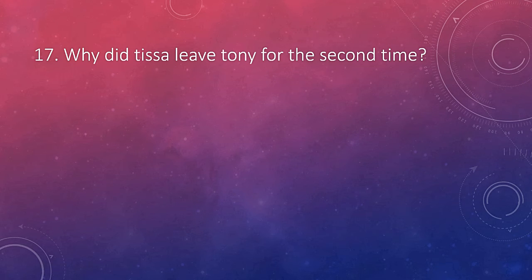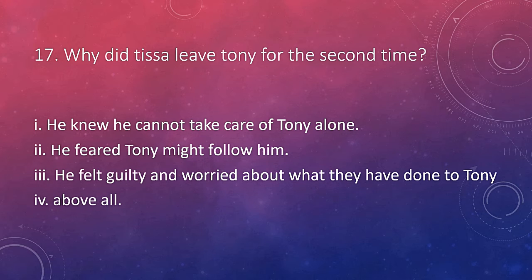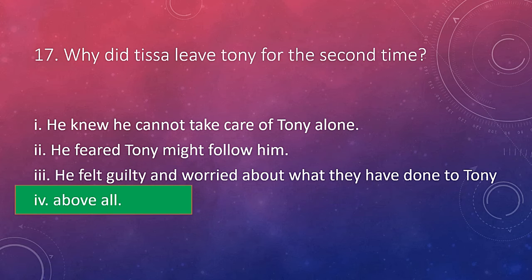Why did Tisha leave Tony for the second time? He knew he could not take care of Tony anymore, and he feared Tony might follow him. In the space of the novel, one may be critical about the narrator leaving Tony after seeing his poor condition. But we should understand that the boy was too helpless — he cannot independently give shelter to Tony as he is still a young boy. He understands this and does not want to give Tony a miserable life again. The answer is above all: he knows he cannot take care of Tony alone, and if he stayed, Tony might follow him, so he ran away.